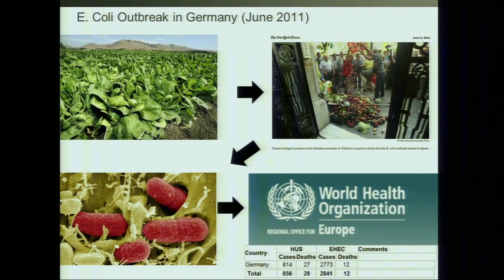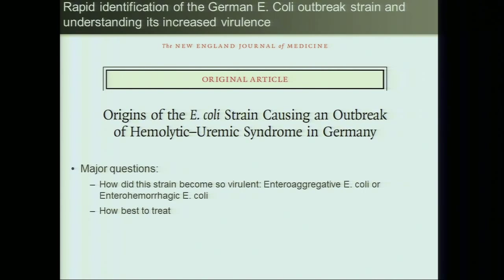We did the same sort of thing with the E. coli outbreak in Germany in June 2011. The problem with that particular bug was it was very, very virulent — the serotype had never been seen to be so virulent, yet it was actually killing people. There are 900 people in Germany on dialysis awaiting kidney transplant because of this infection. We again sequenced that bug along with many other strains of the same serotype to understand how it became so virulent and how to best treat it, and had a paper in the New England Journal very quickly — unprecedented speed of science when you have the right analytical engine.